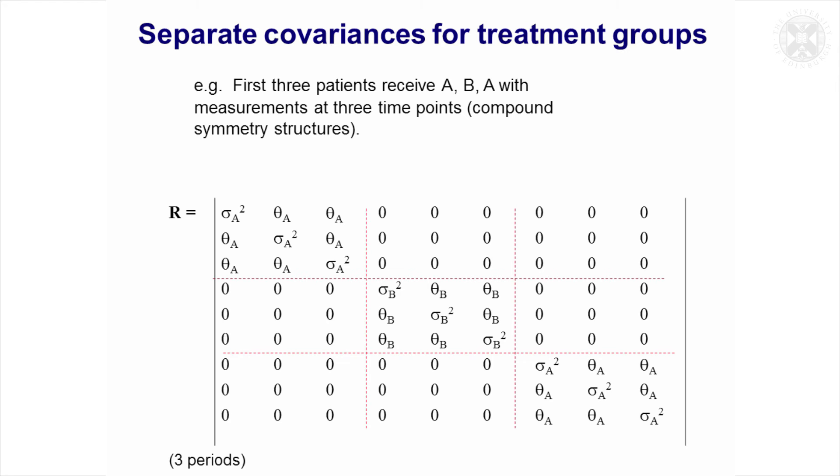So this is just the residual matrix for three patients. You can see they've got different covariance matrices, so that's something else you can do. And quite often it is the case that, in more situations than you might imagine, groups have different variances and covariances, so it's useful to have the ability to be able to allow for that.